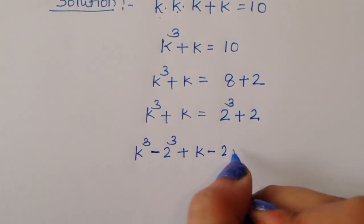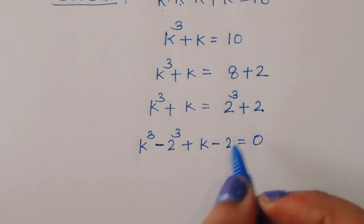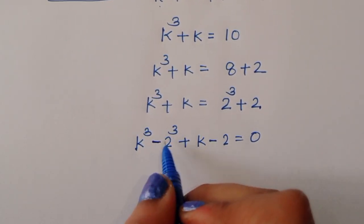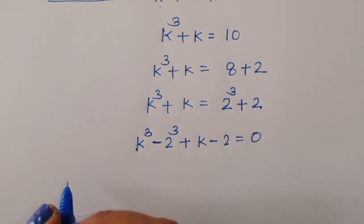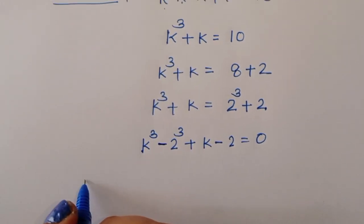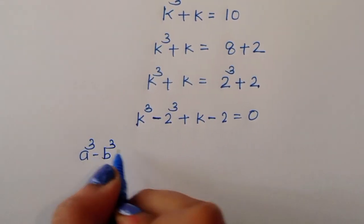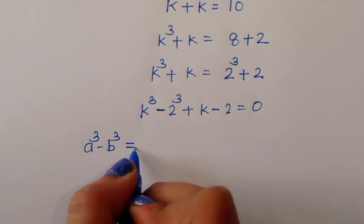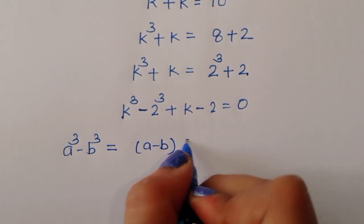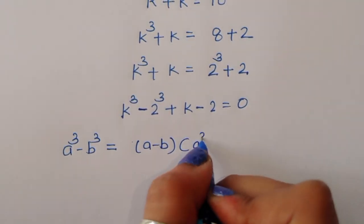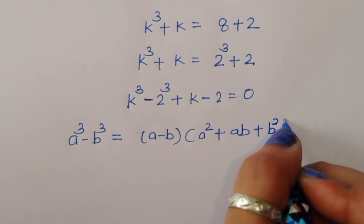Now rearranging: k cubed minus 2 cubed plus k minus 2 is equal to 0. Now for k cubed minus 2 cubed, this is in the form of a cubed minus b cubed. The formula is: a cubed minus b cubed equals (a minus b)(a squared plus ab plus b squared).